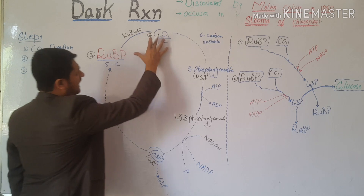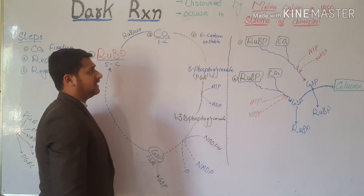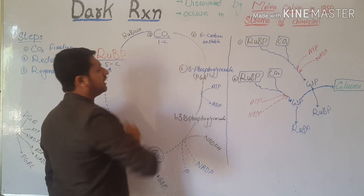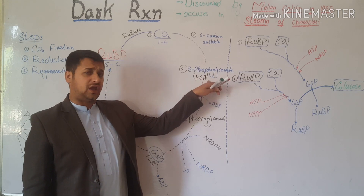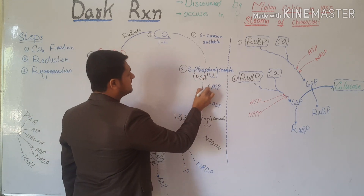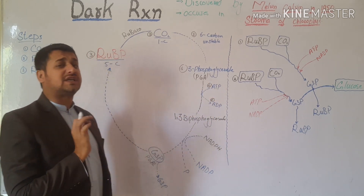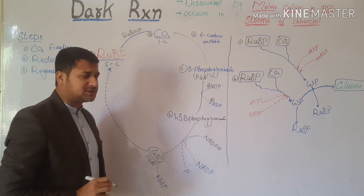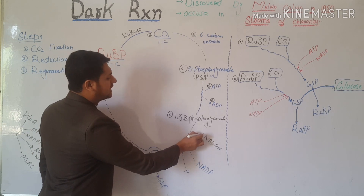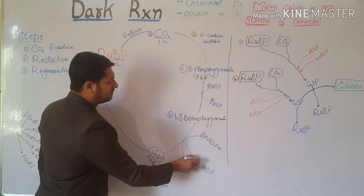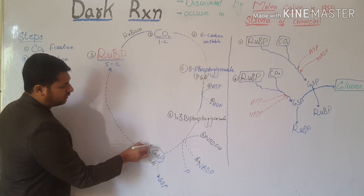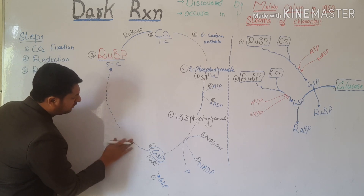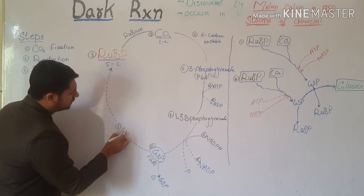From 3 molecules of RuBP combining with 3 CO₂, we get 3 unstable 6-carbon molecules, which are broken down to give 6 molecules of PGA. These 6 PGA molecules require 6 ATP, which are converted into 6 ADP. Then, 6 NADPH reduce the 6 PGA molecules to produce 6 G3P molecules.